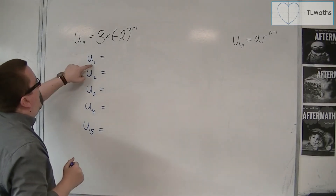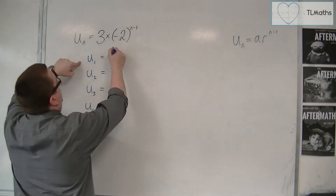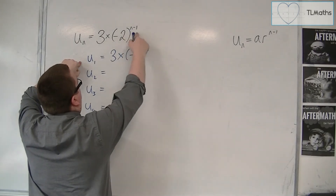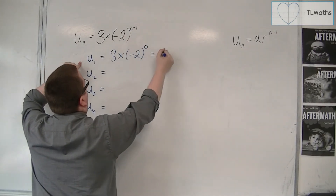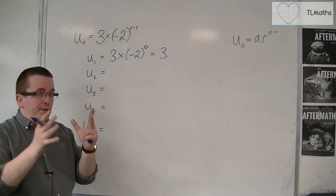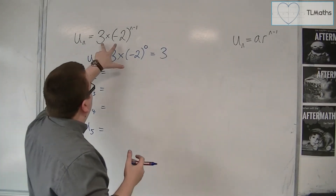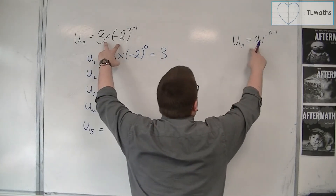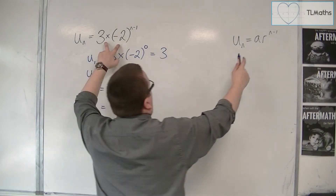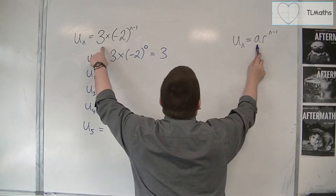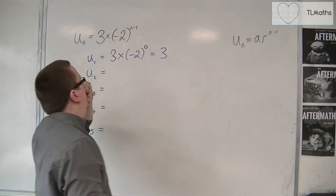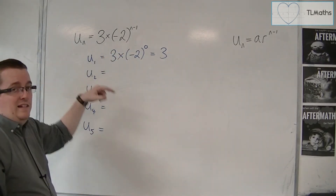So when n is 1, I get 3 times minus 2 to the 1 minus 1, and so that exponent is 0, and so this would just be 3. You might be able to just identify it from the fact that it is of the form given to us in the formula booklet that we derived from the last video. So here is my a, the 3, and my r is the minus 2. So it is clear that the first term had to be 3.